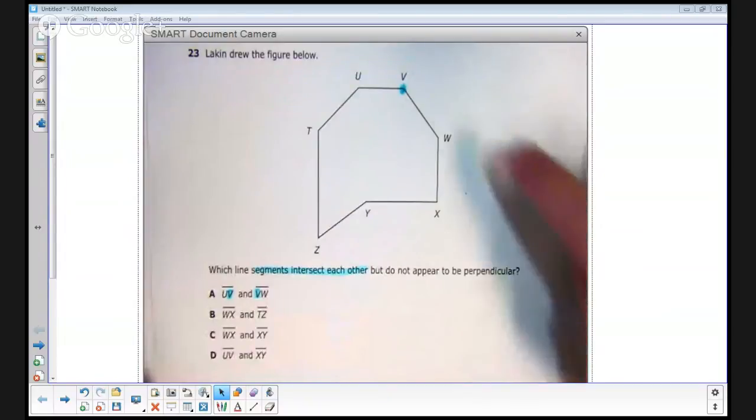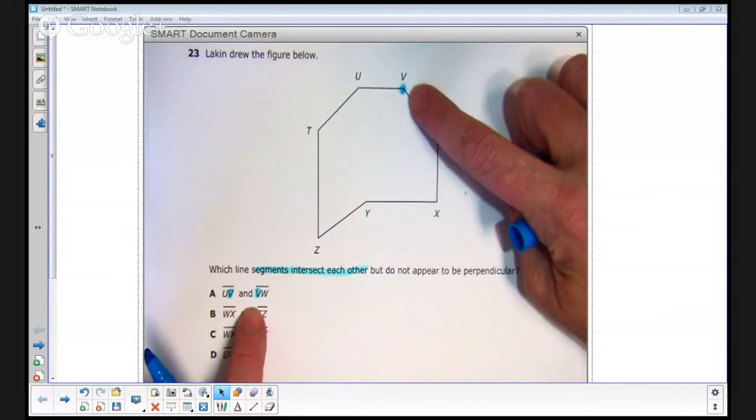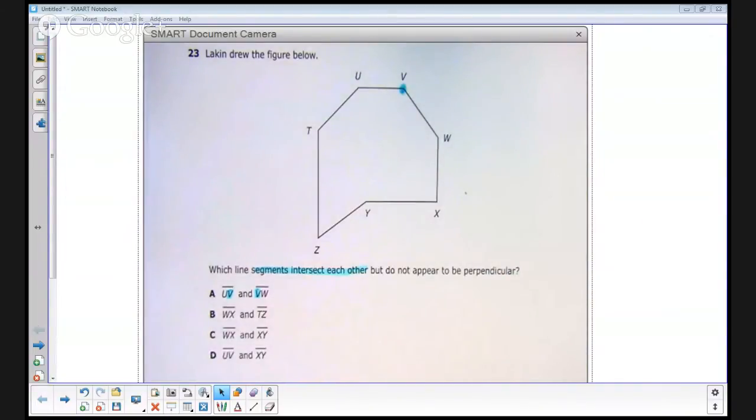What I've done here is I've used the same color to show the intersection, not only in the name of the two line segments, but also in the diagram above. So those two line segments intersect each other, meaning I'm going to keep that answer for now.